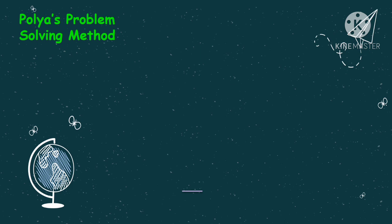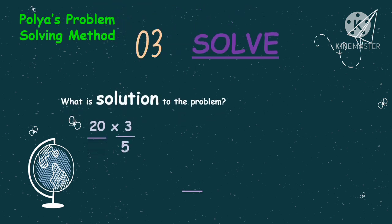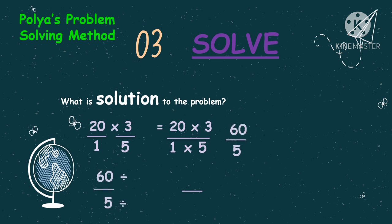Let's now proceed on solving the problem using the number sentence. The solution will be 20 times three-fifths is equal to N. Since we are dealing with a fraction and a whole number, we express the whole number as a fraction using one as the denominator. Then we proceed with multiplication rules: multiply the numerator 20 times 3, and multiply the denominator 1 times 5. So 20 times 3 is 60, and 1 times 5 is 5.